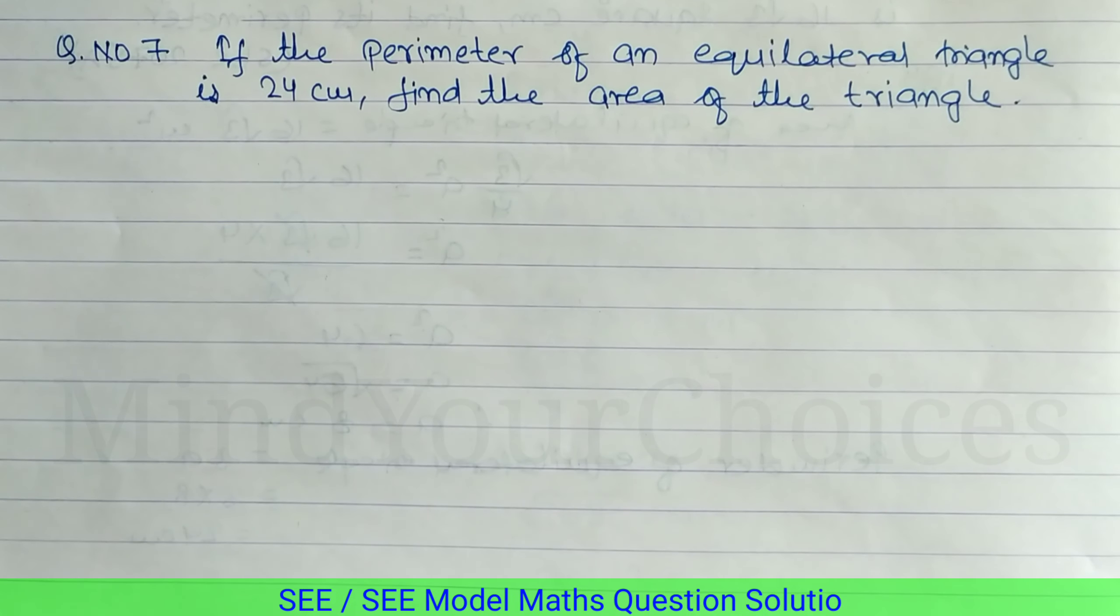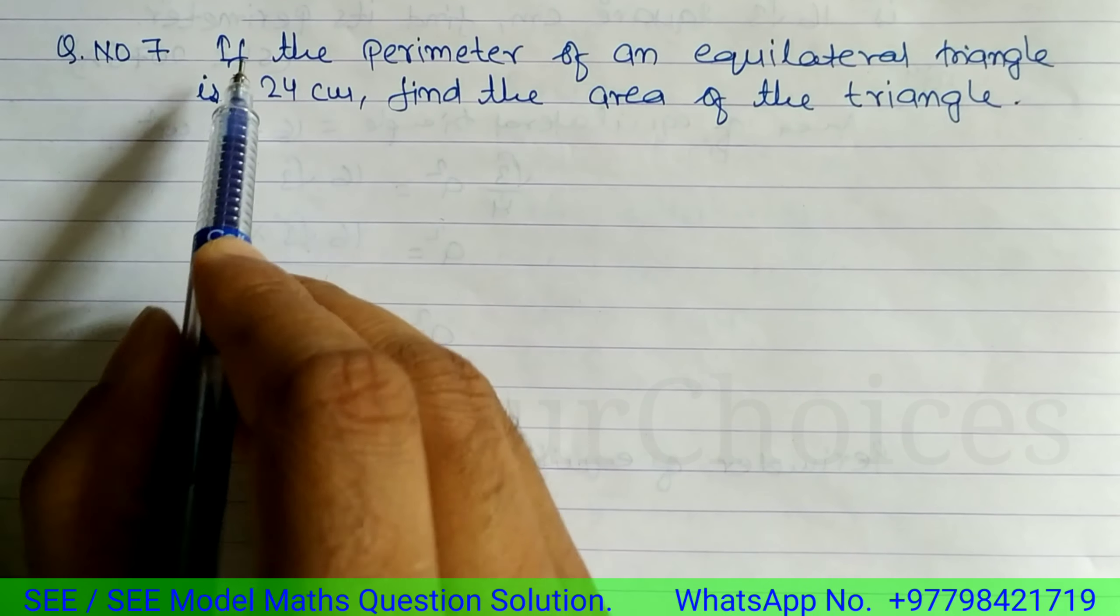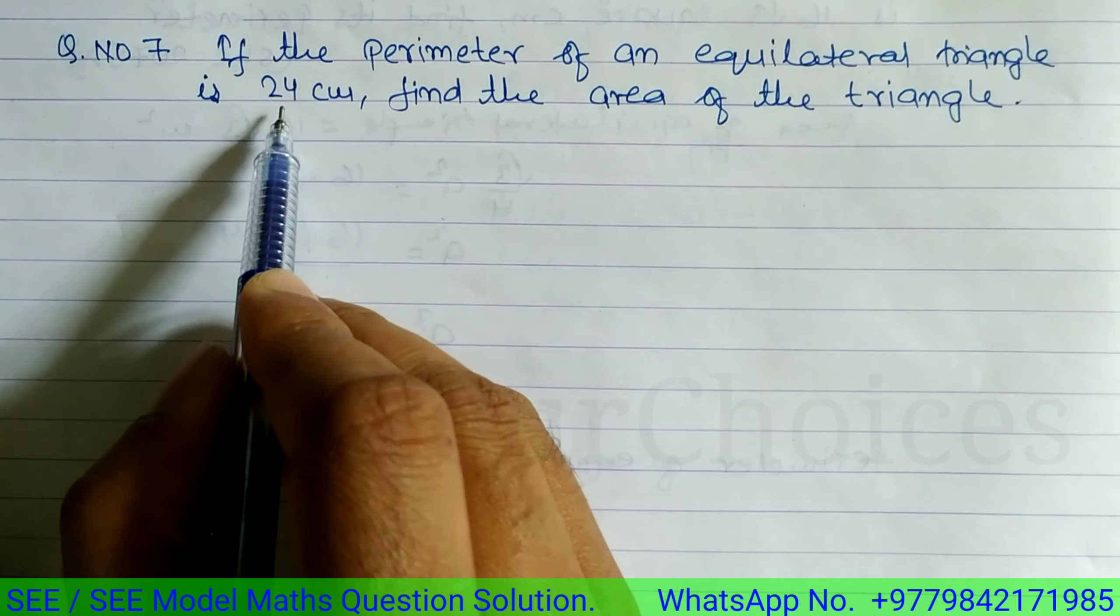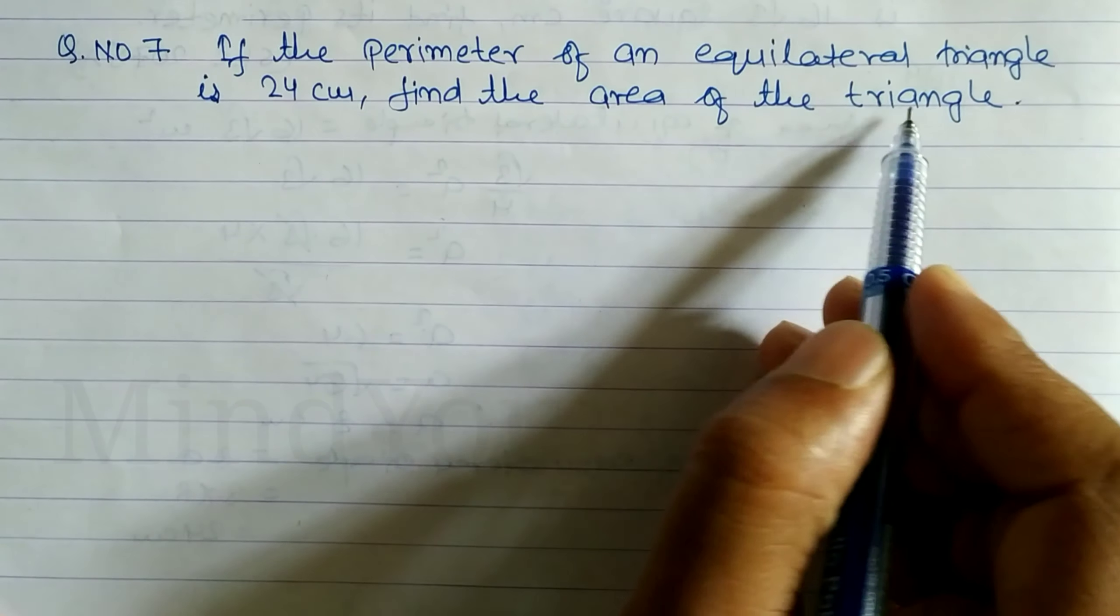I will take this model question, question number 7. If the perimeter of an equilateral triangle is 24 cm, find the area of the triangle.